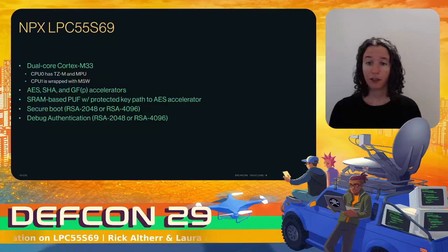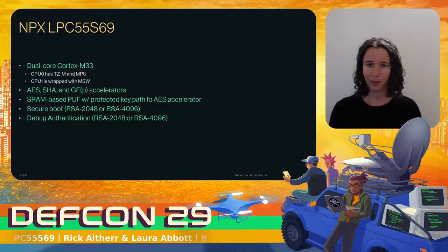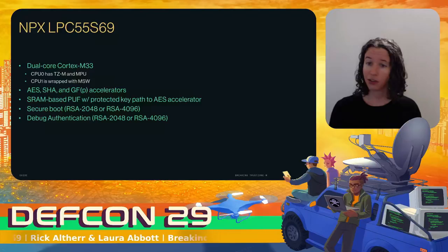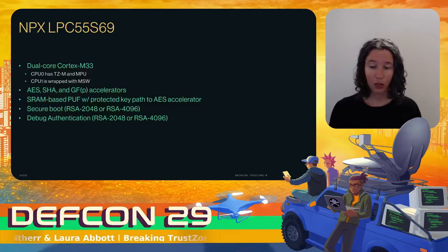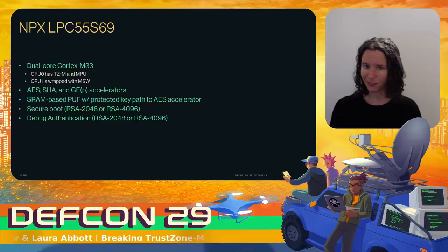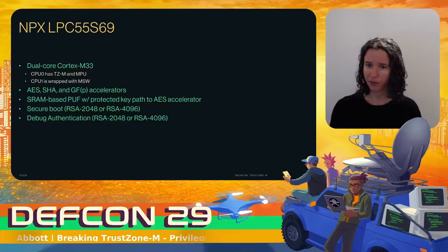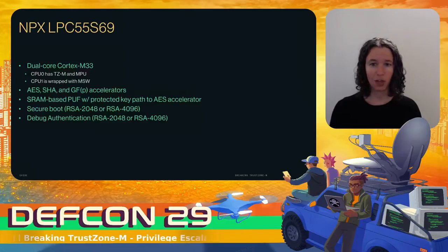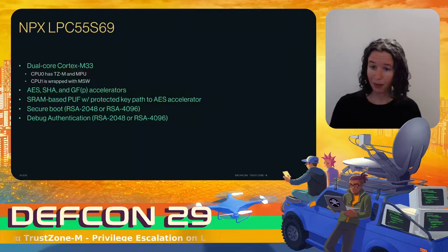There are cryptographic accelerators for AES, SHA, and doing field math with ECC. The chip supports secure boot using RSA signatures as well as authenticated debug. There's a PUF — physically unclonable function — for use with keys. Part of the flash can be locked down after programming to prevent modification. Other variants of the chip support CAN, which is common in automotive use cases. There are a lot of appealing things about this chip.